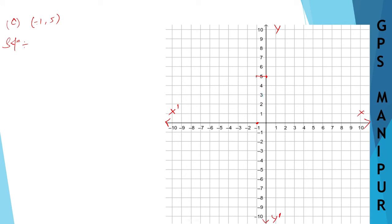Join these two points properly with a scale. This is your point P at (-1, 5). This is the first quadrant, this is the second quadrant — and the point lies in the second quadrant. It lies in the second quadrant.